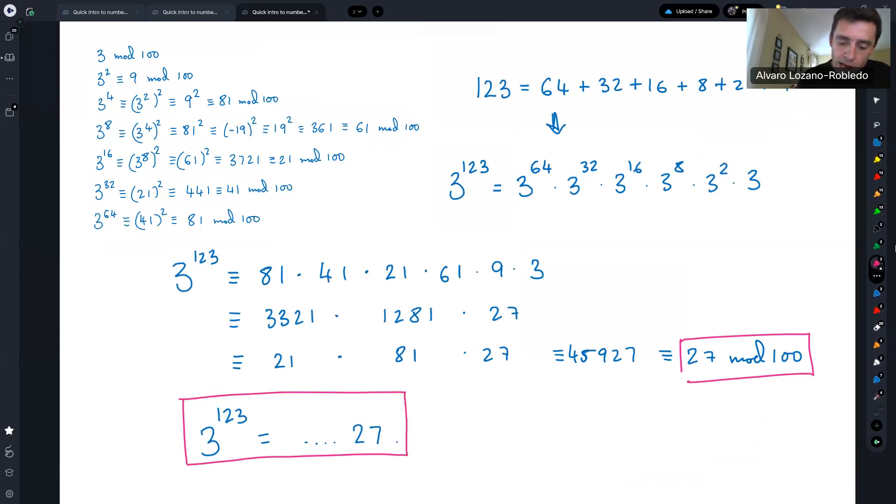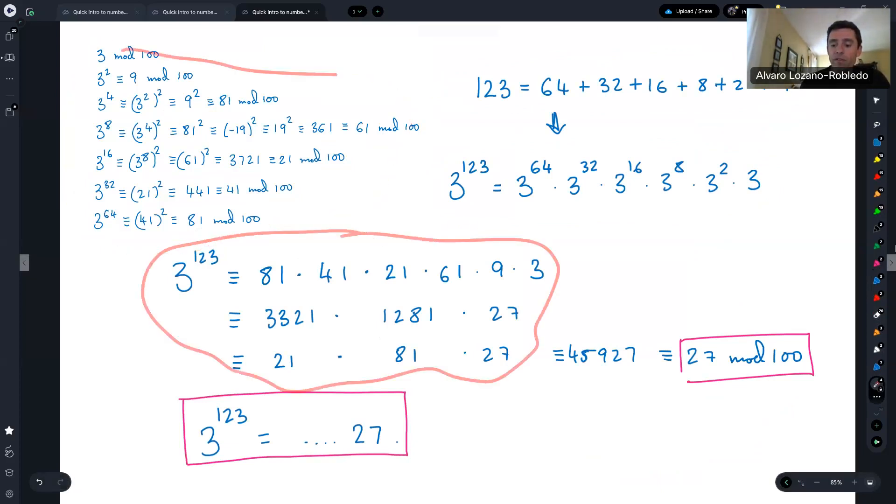There you go. And that is the fast powering algorithm. That's how it works. You compute enough powers of your number so that you can later use the binary expansion of your exponent to translate your high power into powers that you've already computed and then use congruences to simplify that calculation.